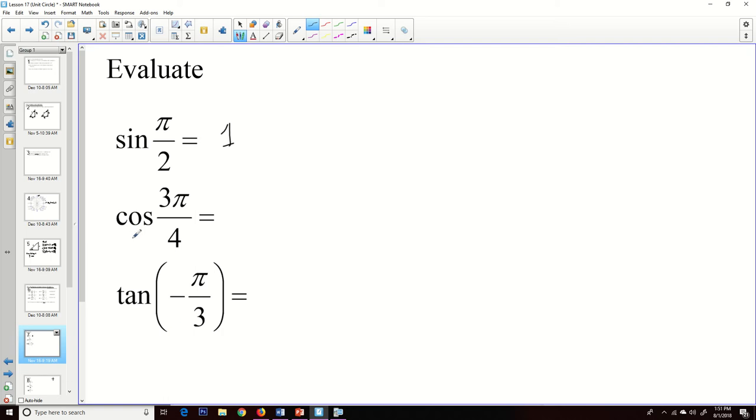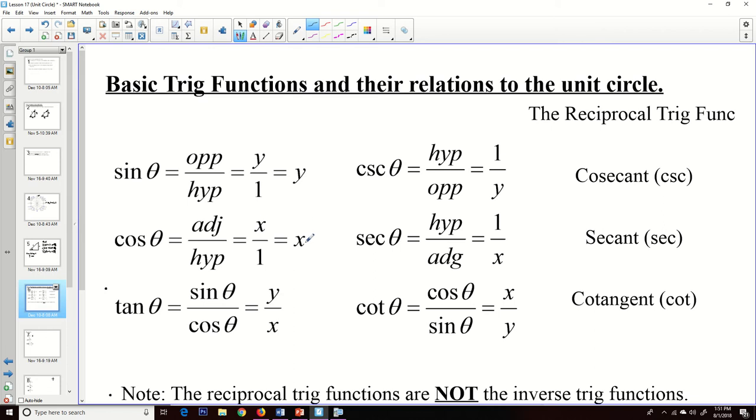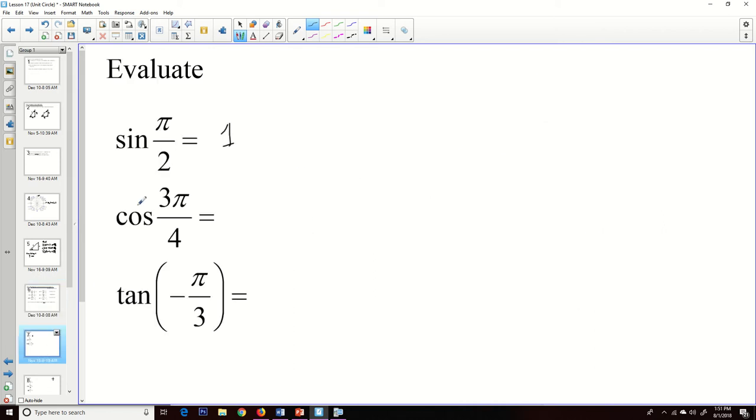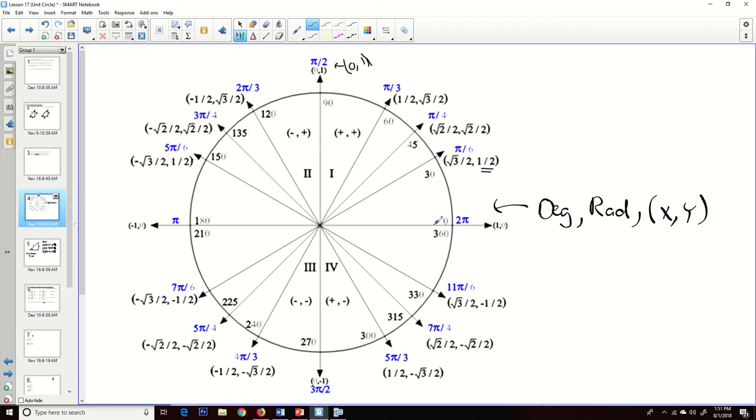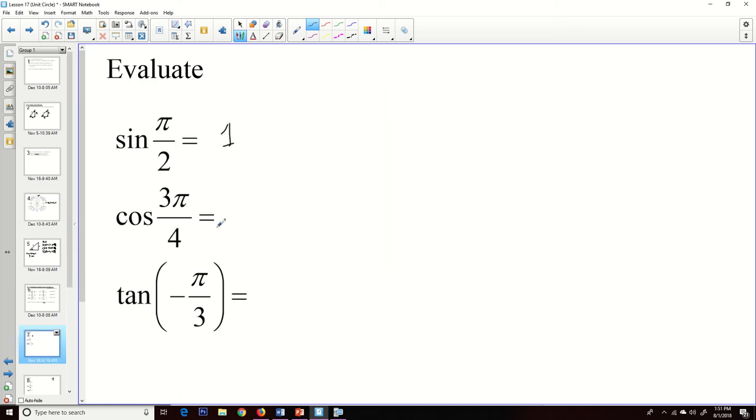Now cosine of any angle is the x value, and we see that right there. So when I say, what is the cosine of 3 pi over 4? I start at the standard position. I go up to 3 pi over 4. I look at that x value, negative square root of 2 over 2, and that is the value of this particular trig expression.